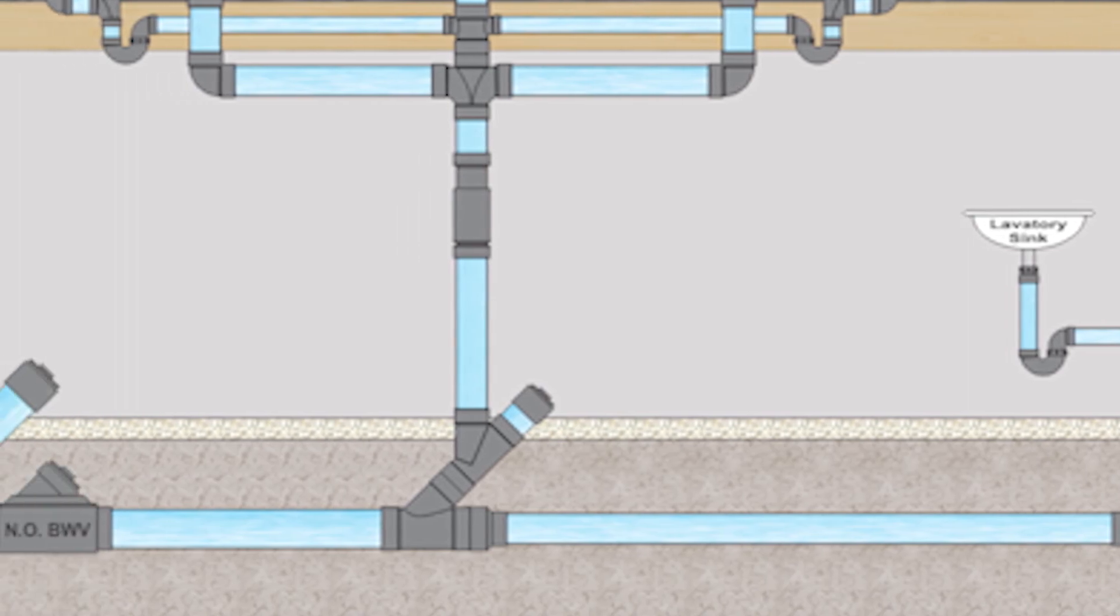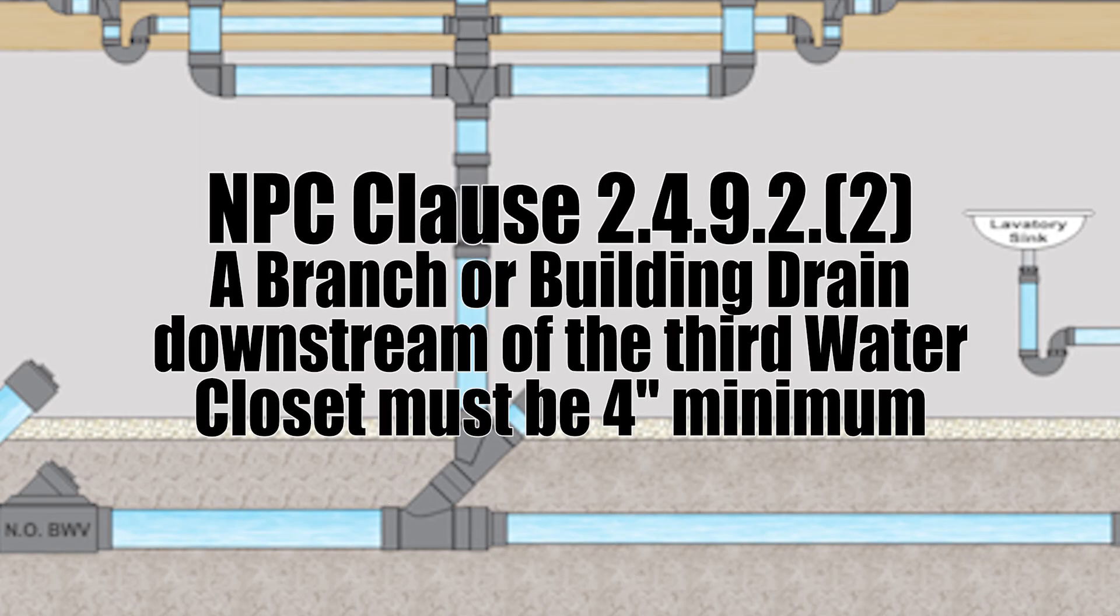What I really need to point out is right here at the base of the SoilerWay stack. We need to point out a very important code clause that you need to know. Clause 2.4.9.2 number 2. Branch and building drains downstream of the third water closet fixture drain connection shall not be less than four inches in size.